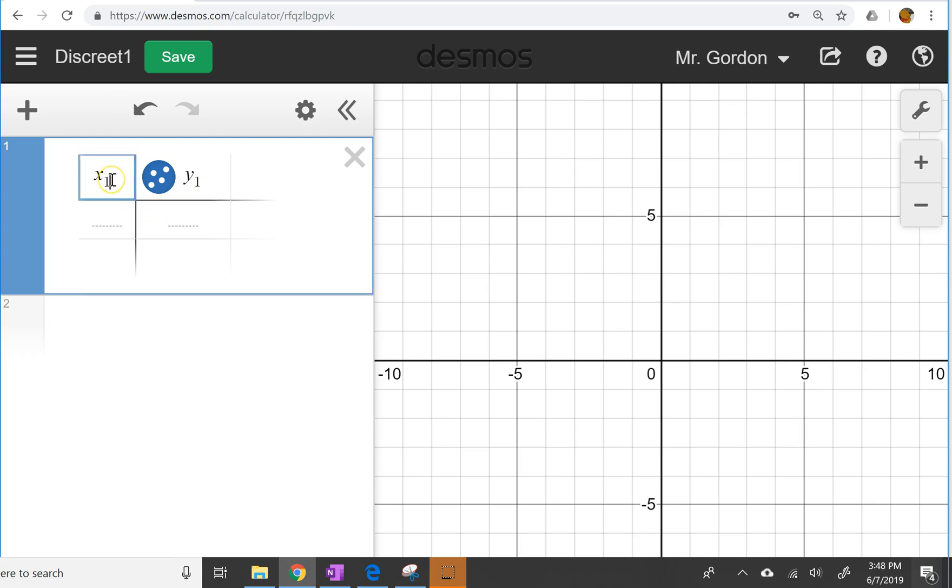So it automatically titles these things, but I can change them to fit the scenario. So if I have n representing the number of boxes, well then, if we're receiving 8 boxes per book, then 8n is going to represent the number of books. So for 1 box, we'll get 8 books. After 2 boxes, 16 books.